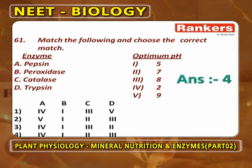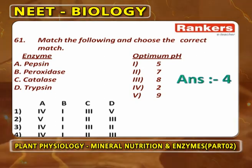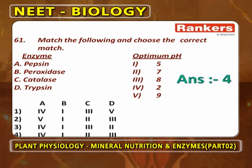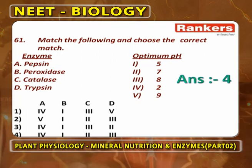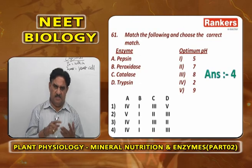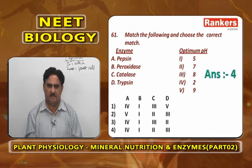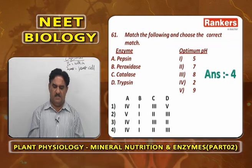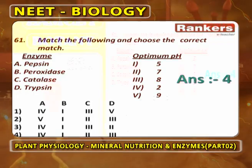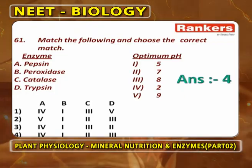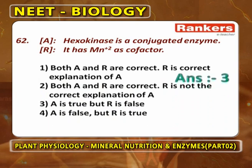These pH values represent where enzymes show maximum activity — sensitivity to pH. For pepsin it is 2, peroxidase it is 5, amylase/urease/catalase it is 7, and trypsin it is 8. The answer for this question is option 4.